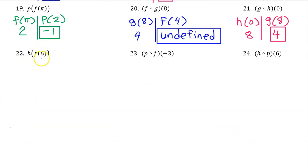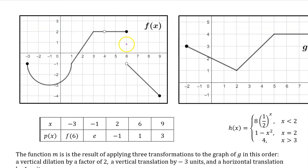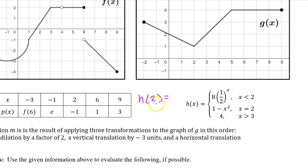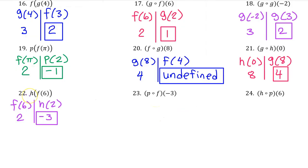Number 22. Working from the inside out we begin with F at 6. Here's the input value of 6, and we pick the closed circle not the open circle. So F at 6 is 2. Next we do H at 2. H at 2 means X equals 2, so the middle piece applies. Plugging in 2 for X gives us 1 minus 2 squared, which is 1 minus 4. That's negative 3. That's the answer.